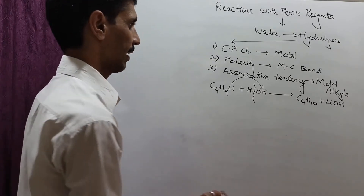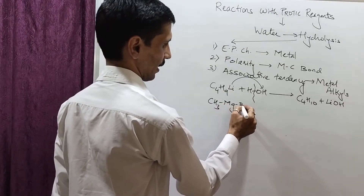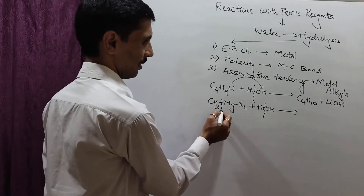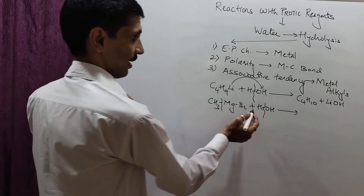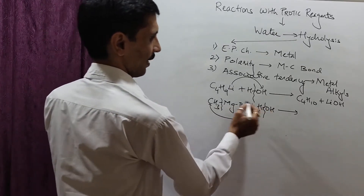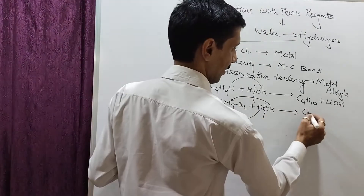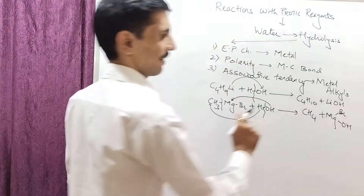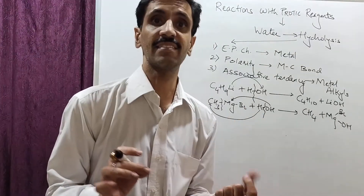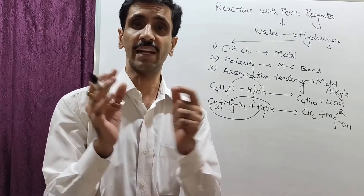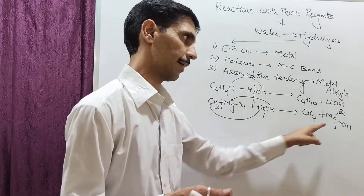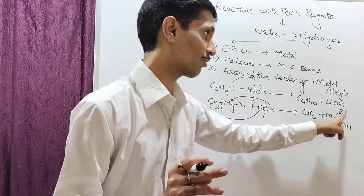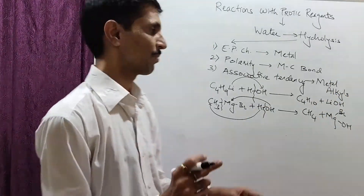Similarly, for a Grignard reagent CH₃MgBr treated with water: the bond between H and OH breaks, then the C-Mg bond breaks forming a carbanion, which combines with H⁺ to give methane. The OH goes with magnesium, giving Mg(Br)OH. Note: in the notation MgBrOH, the OH is attached to magnesium, not to bromine — that is an important clarification.